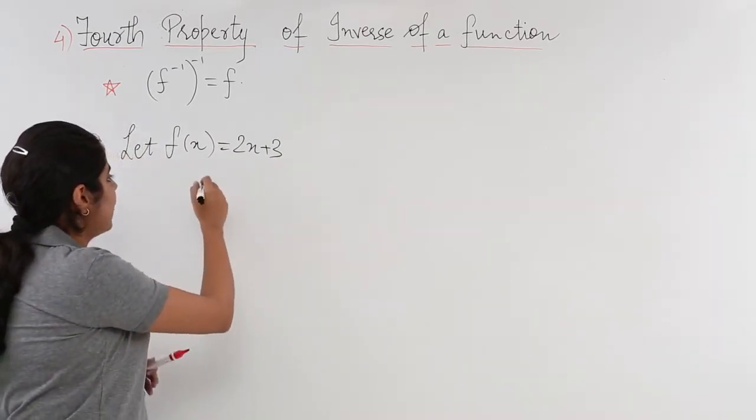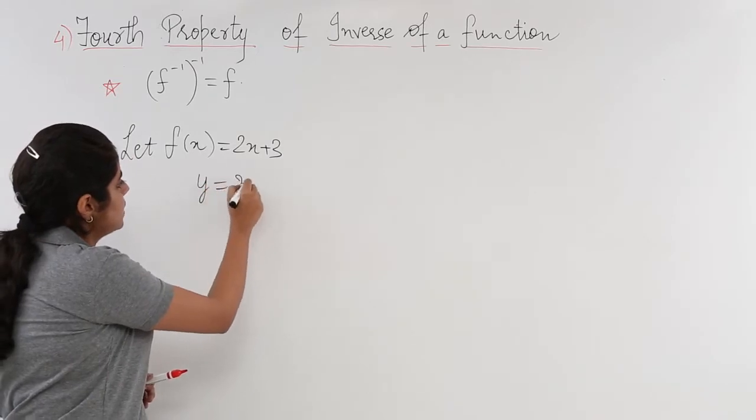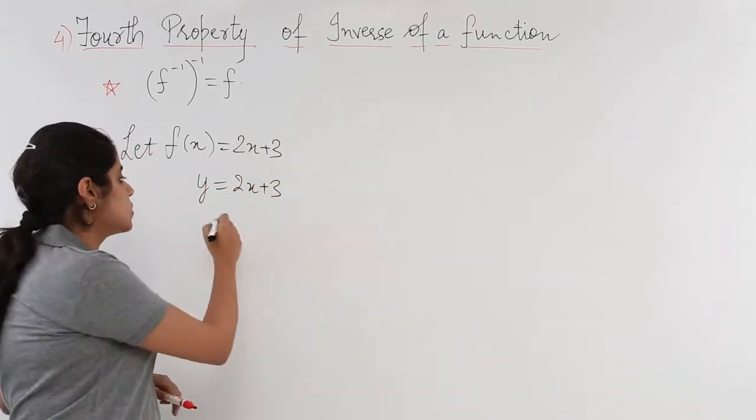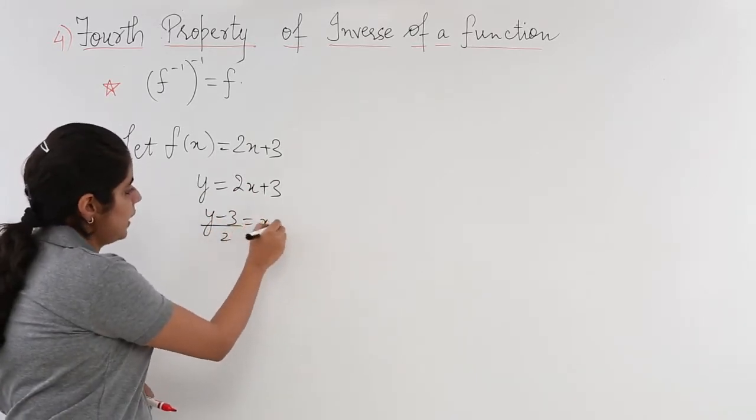To find f inverse of x, where y = 2x + 3, I first need to find the value of x. So (y - 3)/2 = x.